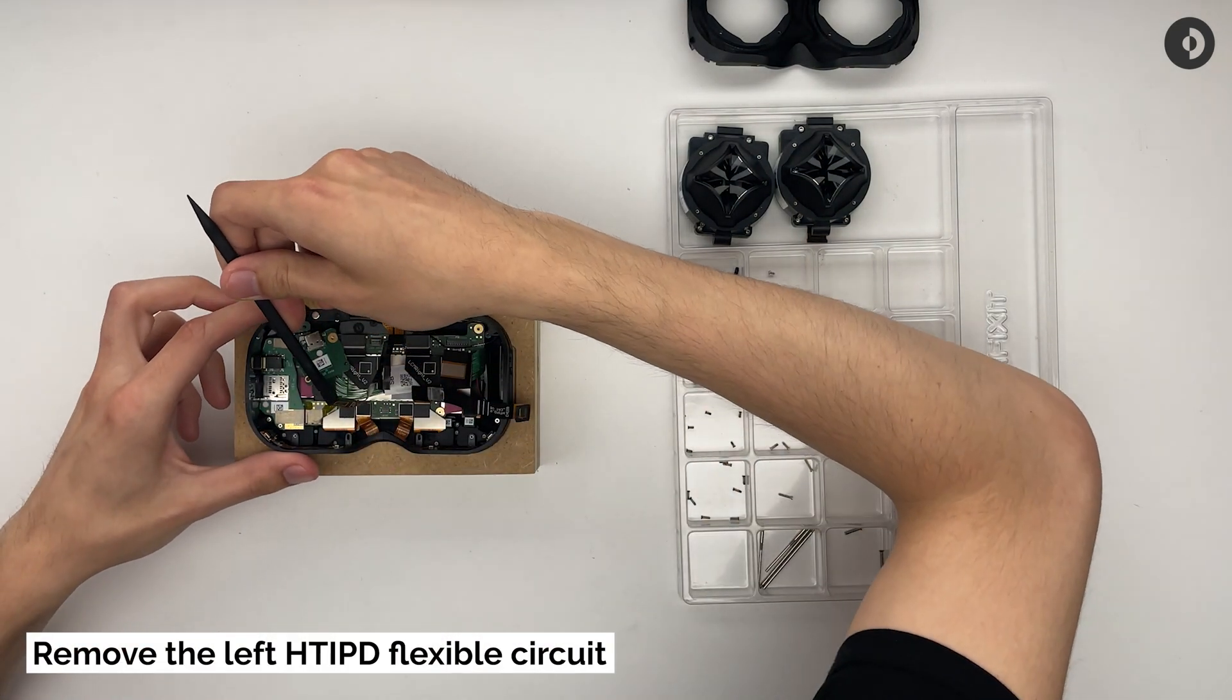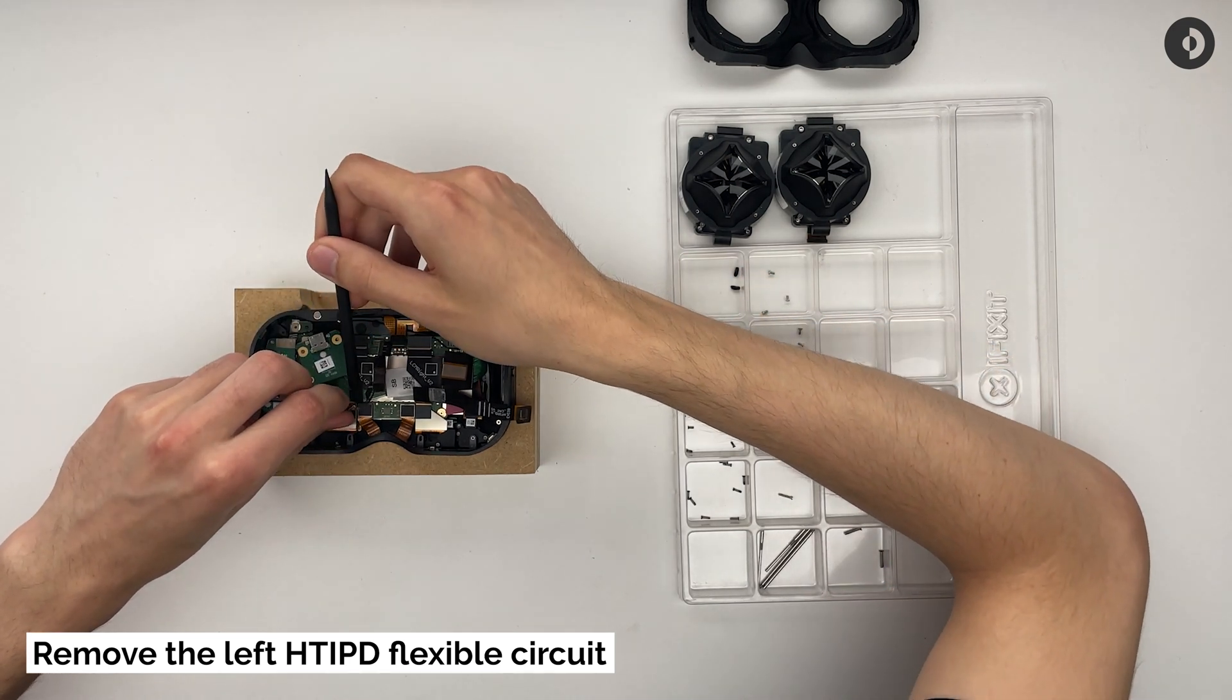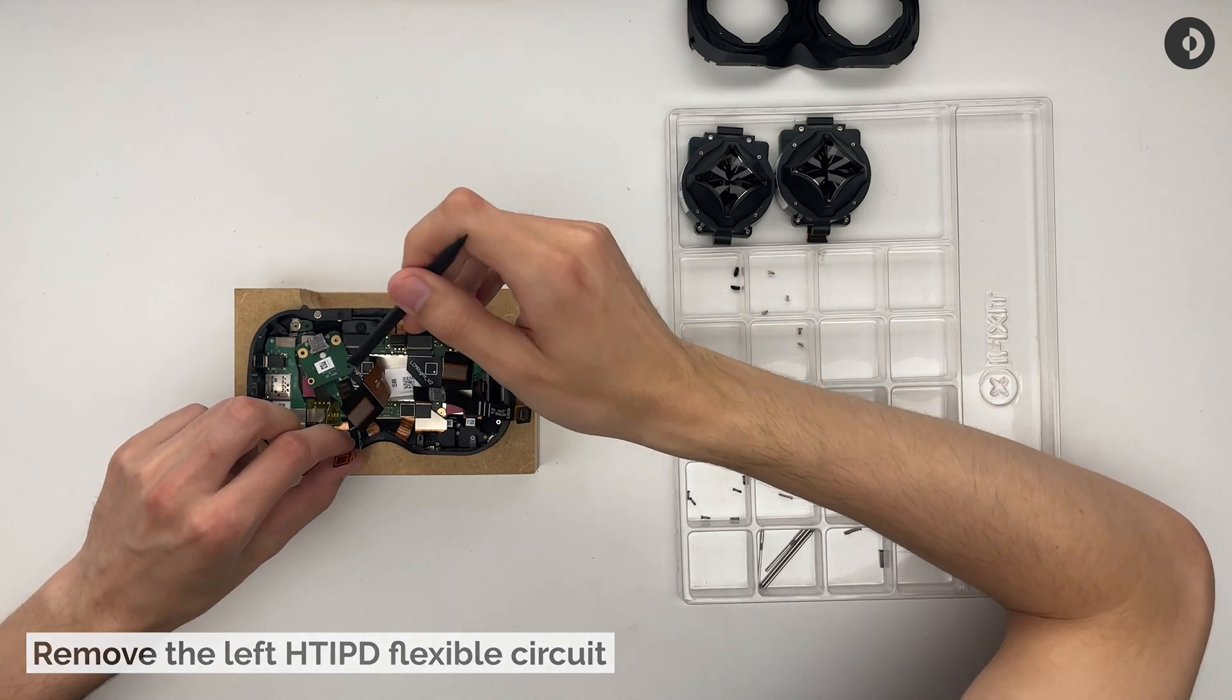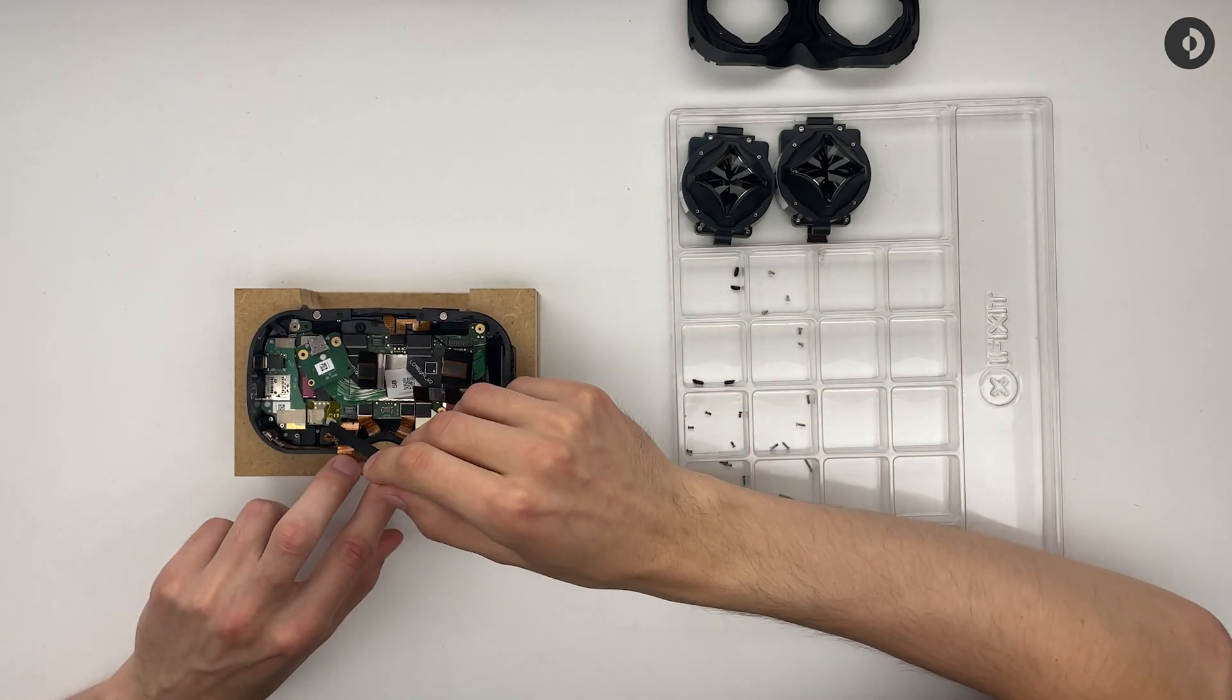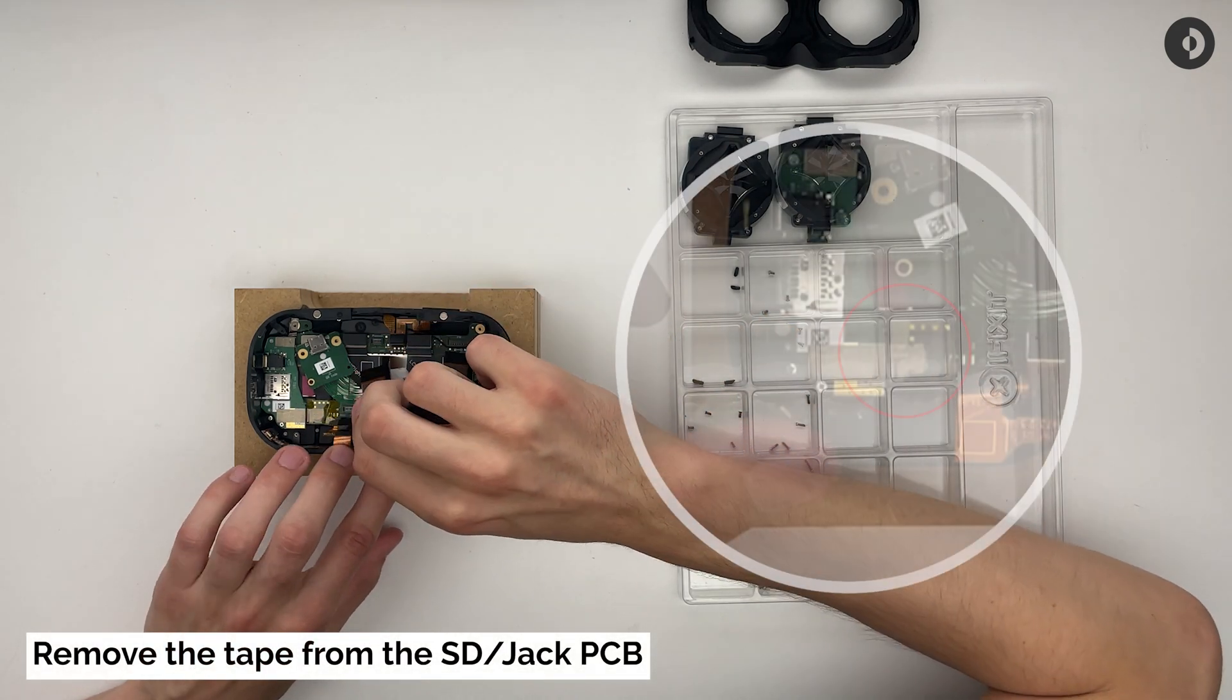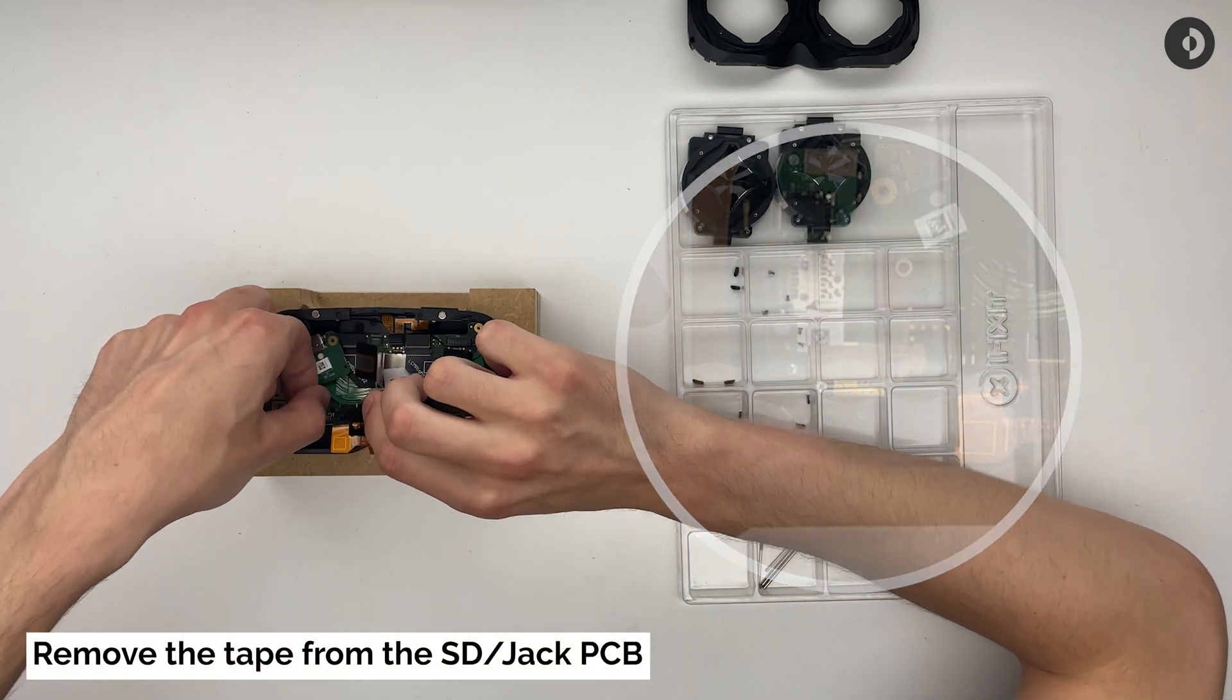Disconnect the FPC you will find the furthest to the left, the one with the triangular stiffener. Before peeling off the tape between the SD jack PCB and the mainboard.